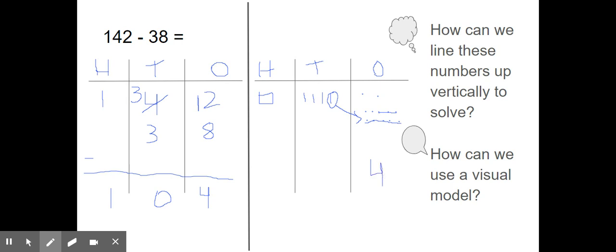How many tens are we taking away? 3 tens. Let's cross them out. 1, 2, 3. How many tens do I have left? 0. Are we taking away any hundreds? Nope, 38 doesn't have any hundreds to take away, so we have 100 left. We got the same answer. Great job.